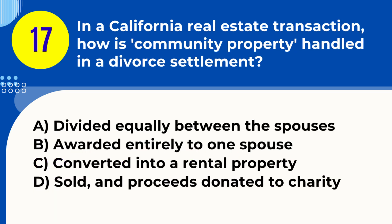Question 17. In a California real estate transaction, how is community property handled in a divorce settlement? A. Divided equally between the spouses. B. Awarded entirely to one spouse. C. Converted into a rental property. D. Sold and proceeds donated to charity. Answer: A. Divided equally between the spouses. Explanation: In California, community property, including real estate acquired during marriage, is generally divided equally between the spouses in a divorce settlement.